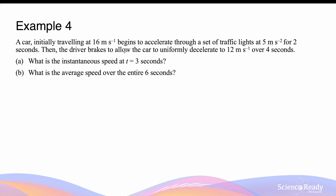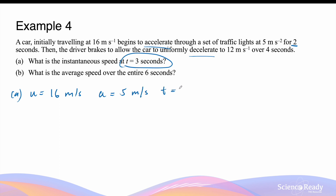A car initially travelling at 16 meters per second begins to accelerate at 5 meters per second squared for 2 seconds, then the driver brakes so the car uniformly decelerates to 12 meters per second over 4 seconds. For the instantaneous speed at t = 3, we first identify that t = 3 falls during the deceleration phase. The final velocity at the end of the 2-second acceleration is 16 + 5×2 = 26 meters per second.